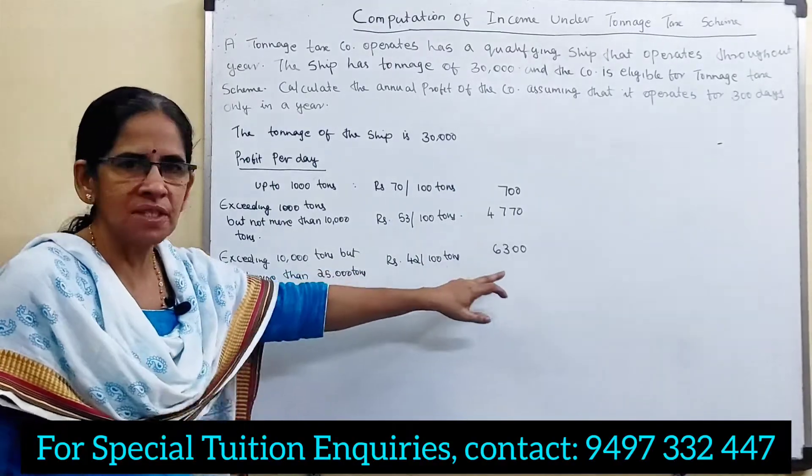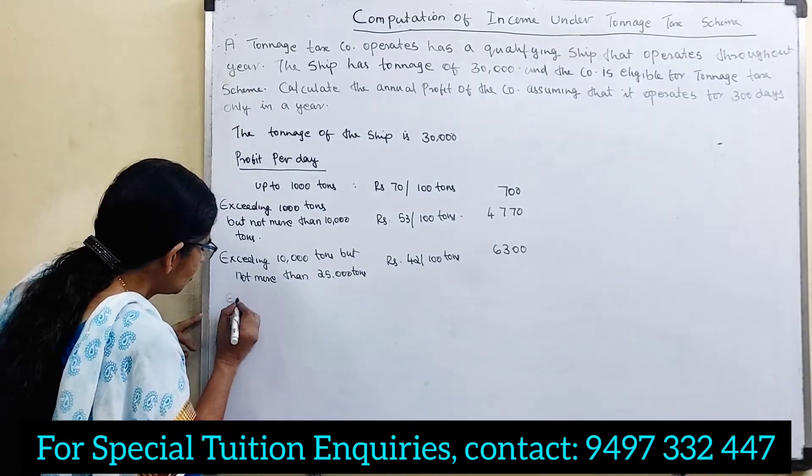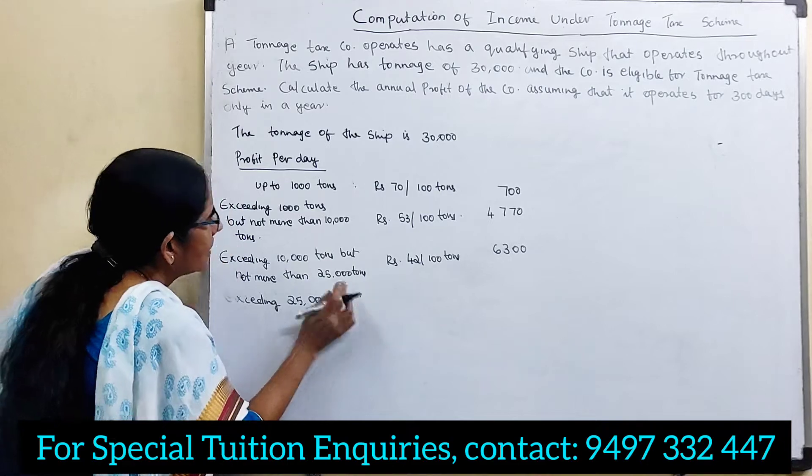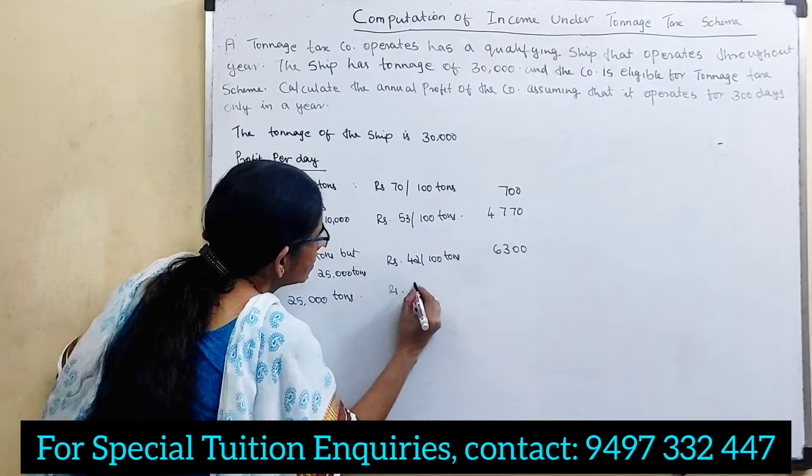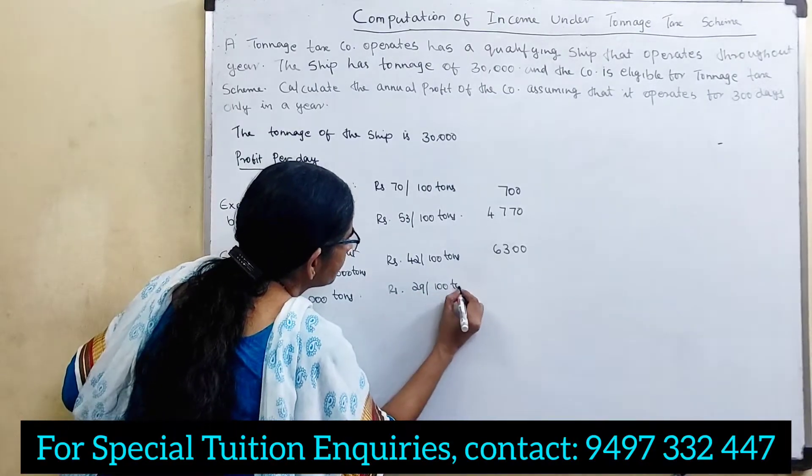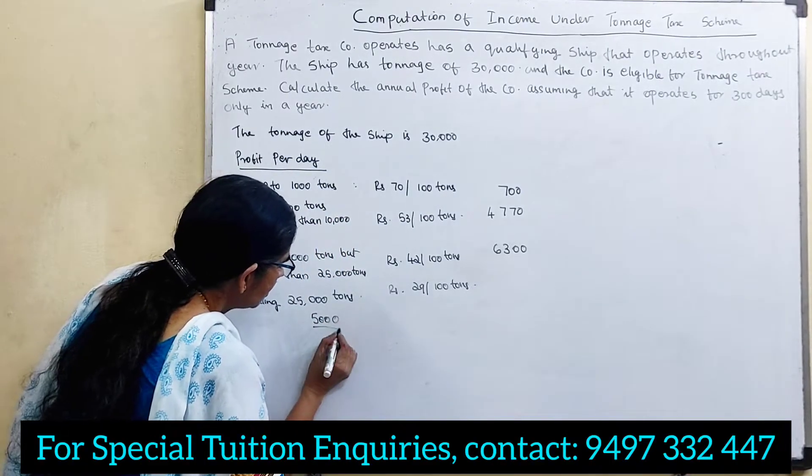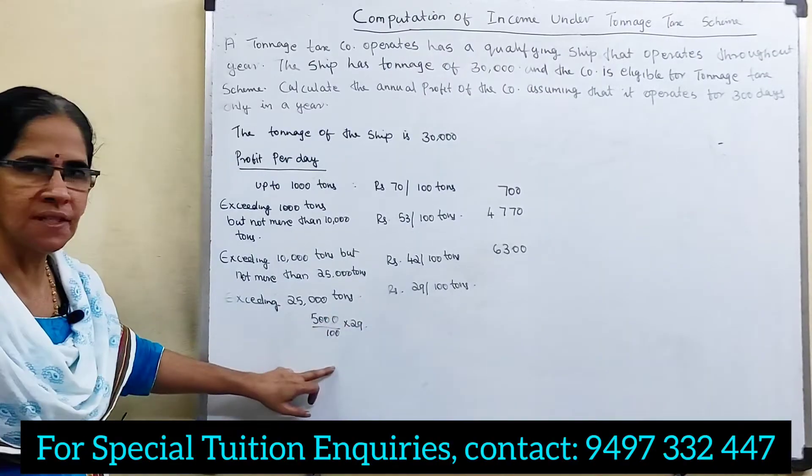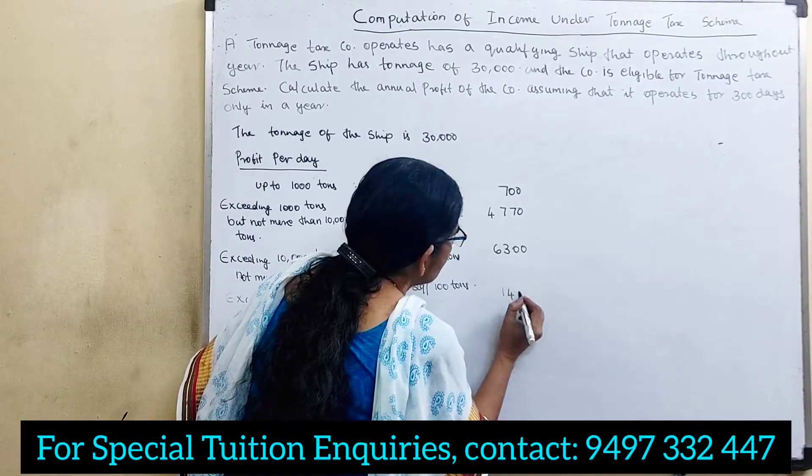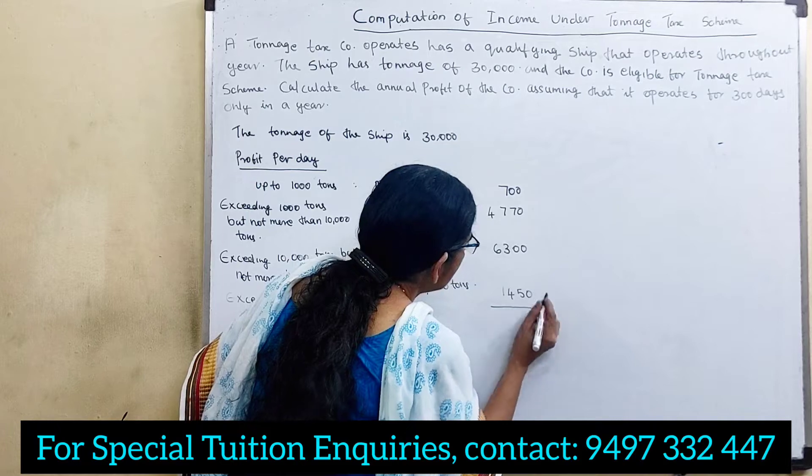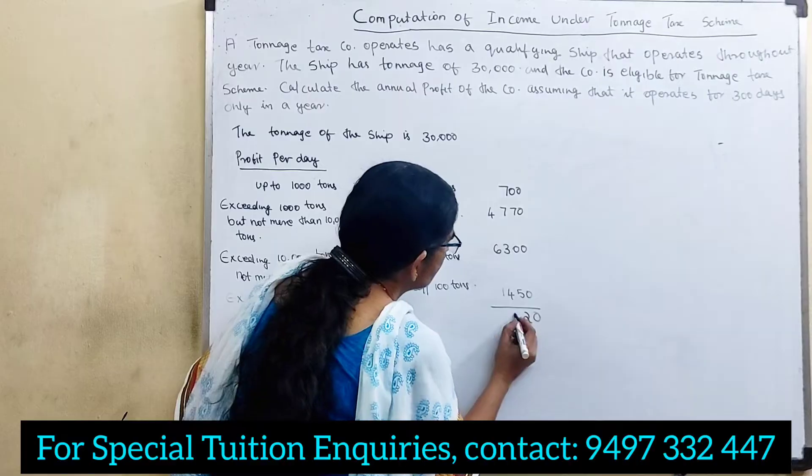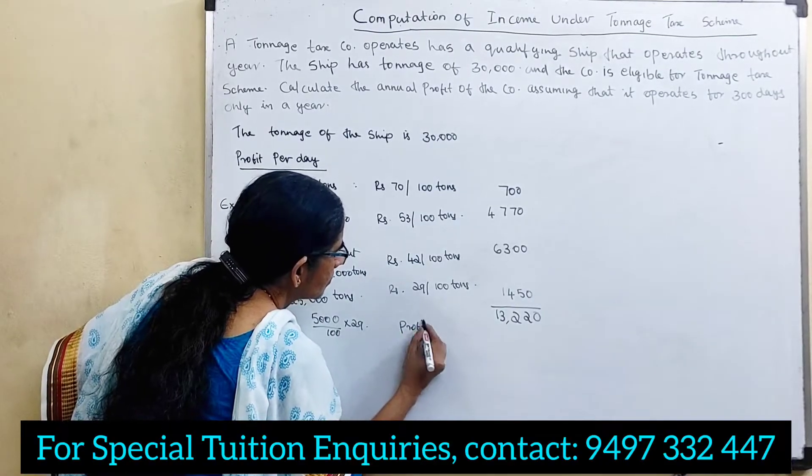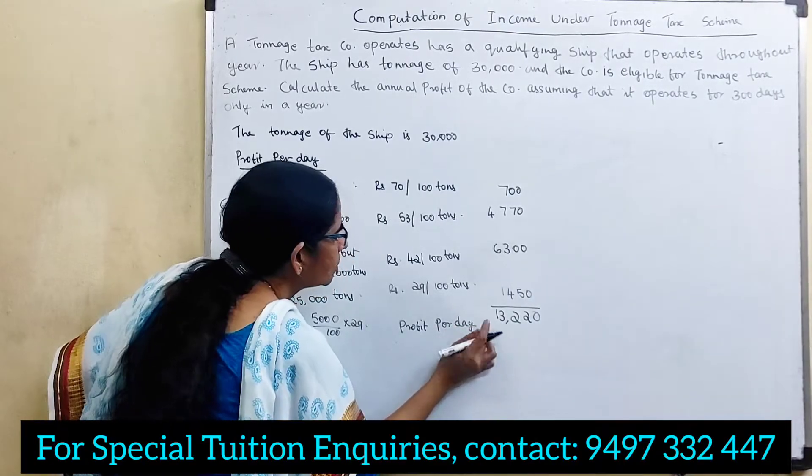Exceeding 25,000 tons. 30,000 minus 25,000 is 5,000. 5,000 divided by 100 into 29, that is 1,450. Therefore, profit per day is equal to 13,220. That is profit per day.